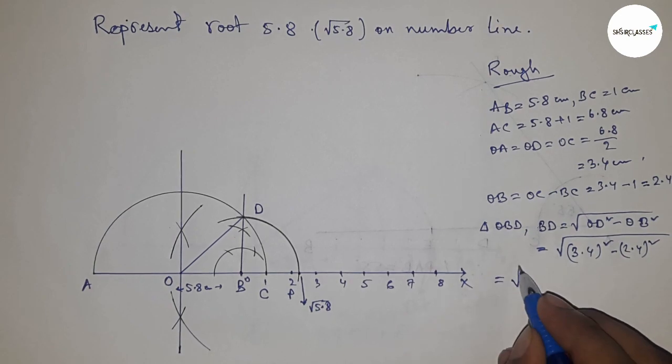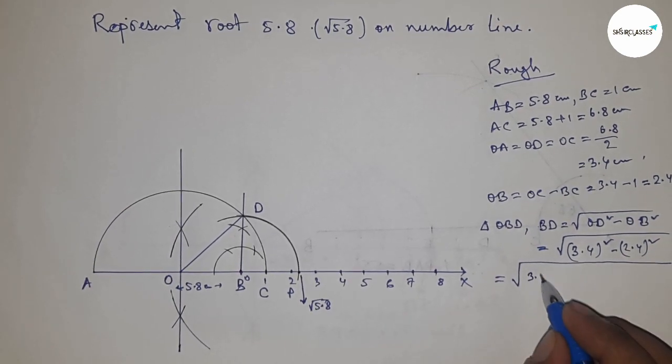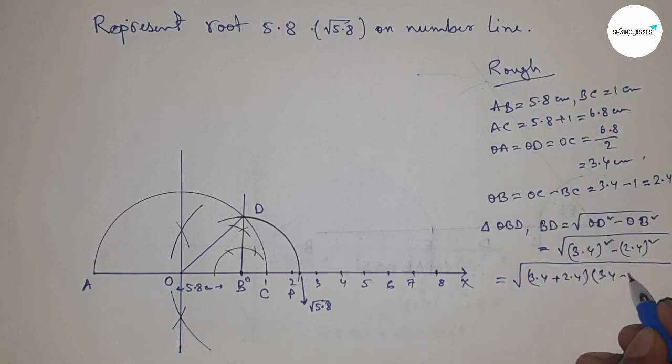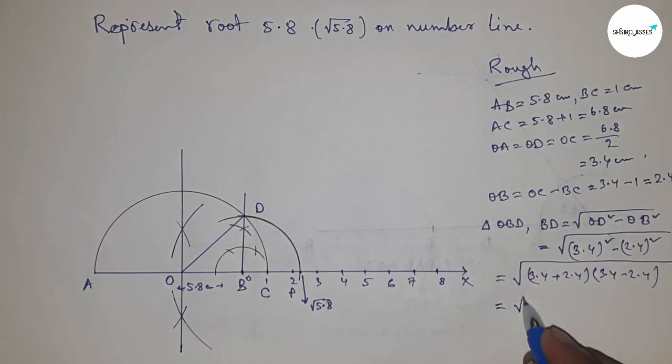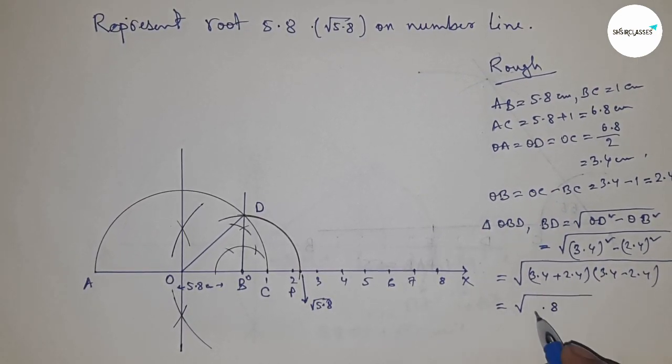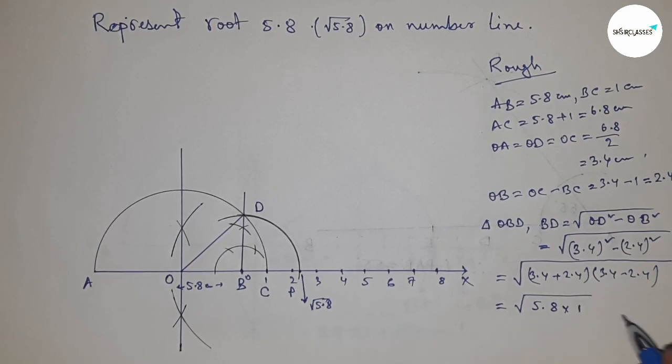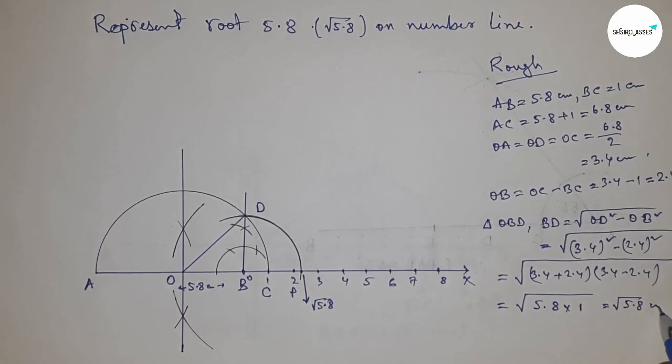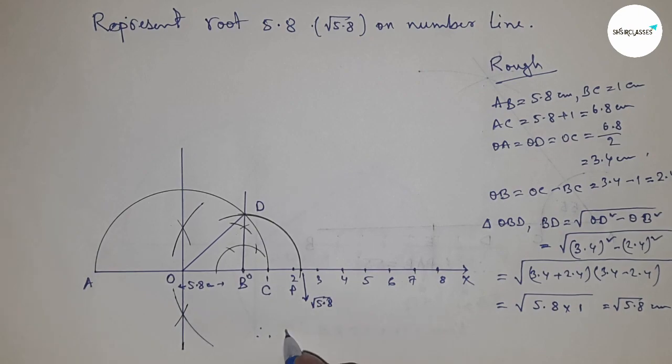Now applying the formula a squared minus b squared equals (a plus b)(a minus b), from the first two terms this is 5.8 times 1, so this is root 5.8 centimeters. Therefore, BD equals BP equals root 5.8 centimeters.